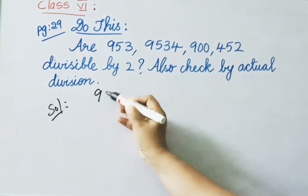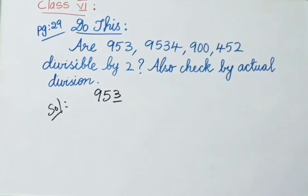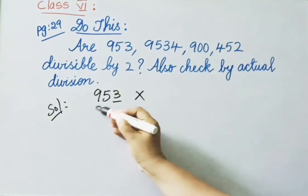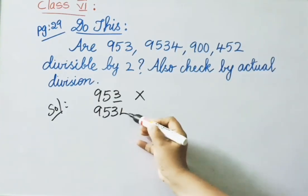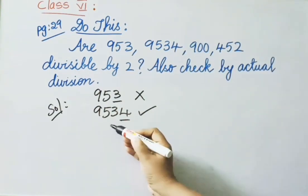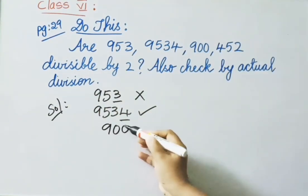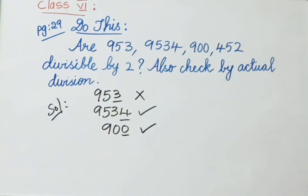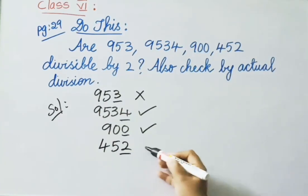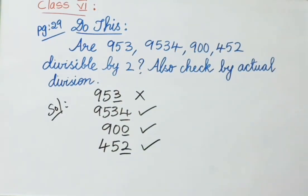Solution: The number 953 has 3 in ones place. According to the divisibility rule by 2, ones place must have 0, 2, 4, 6, or 8. Since 3 is there, 953 is not divisible by 2. The number 9534 has 4 in ones place, so it is divisible by 2. The number 900 has 0 in ones place, so it is also divisible by 2. The number 452 has 2 in ones place, so it is also divisible by 2.